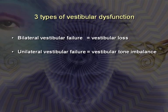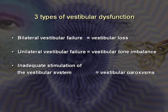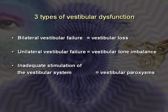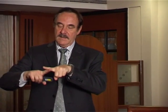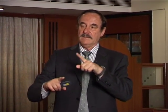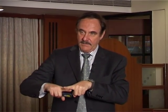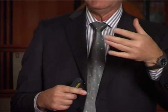Two disorders are caused by inadequate stimulation of an otherwise intact vestibular system: BPPV, where there is a clot in the canal, and vestibular paroxysmia, where neurovascular cross-compression causes demyelination and ephaptic spreading when the vessel compresses the nerve. This causes excitation of the nerve with short, frequent attacks — not long attacks.